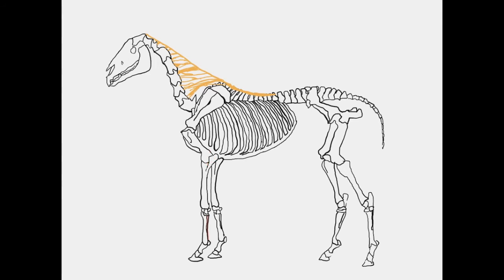Biceps brachii muscle, with its lacertus fibrosus shown in yellow, connecting to extensor carpi radialis. And the brachialis muscle.